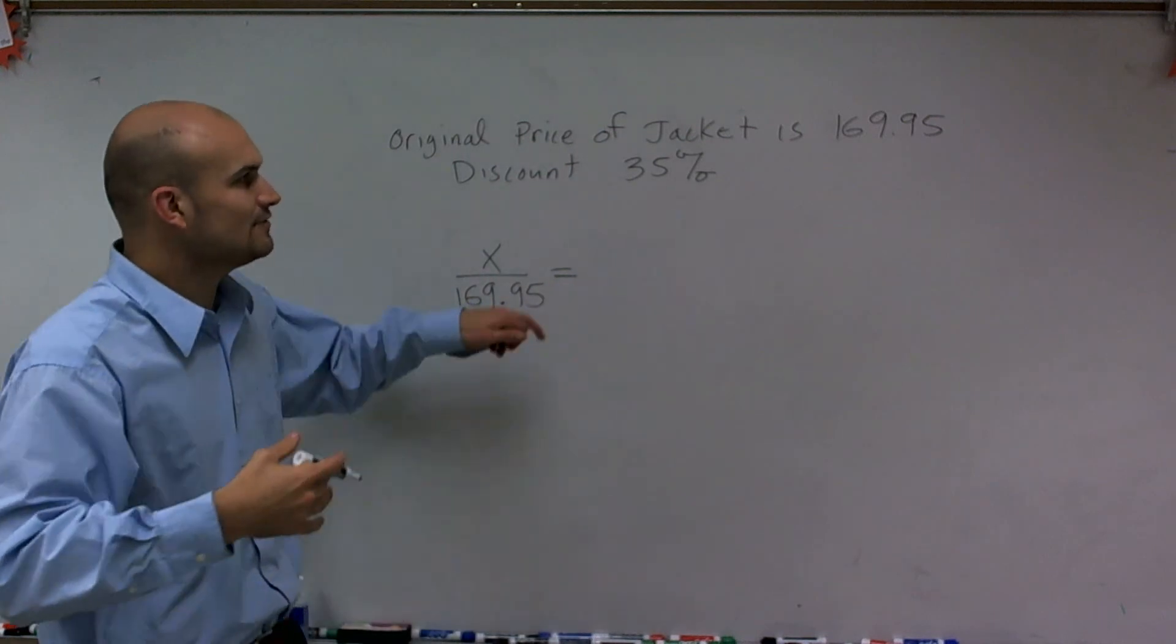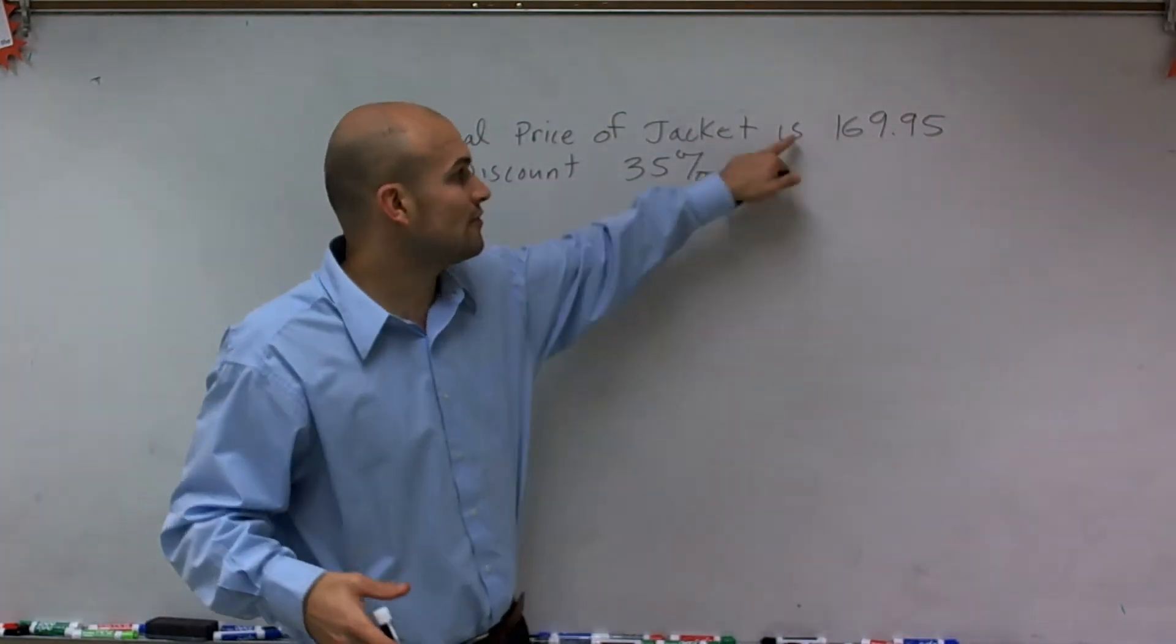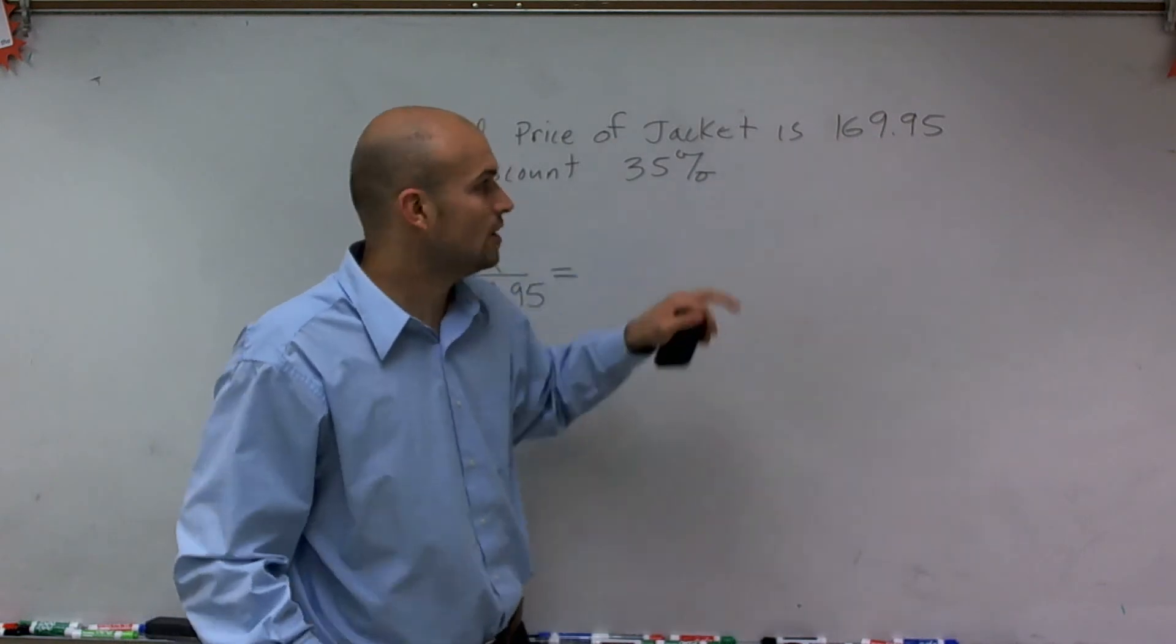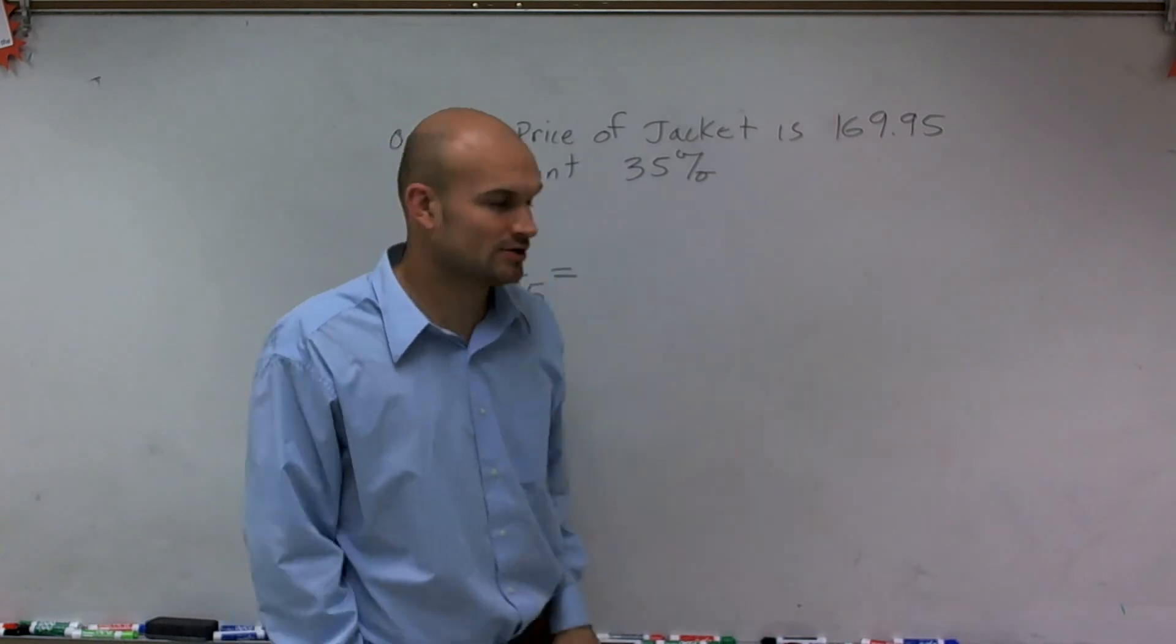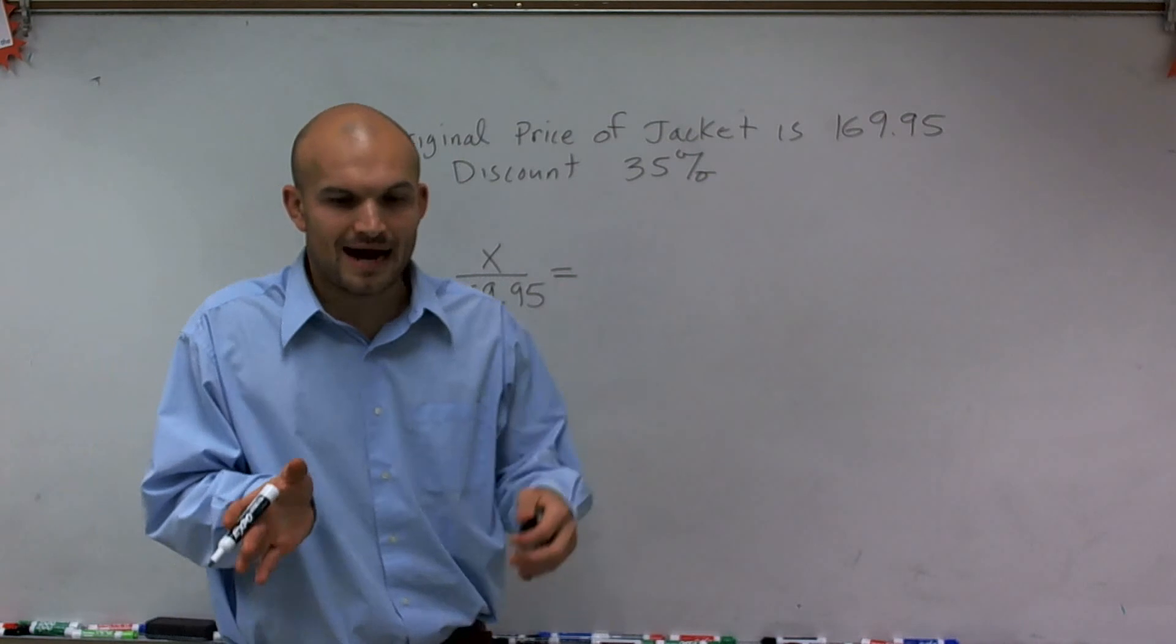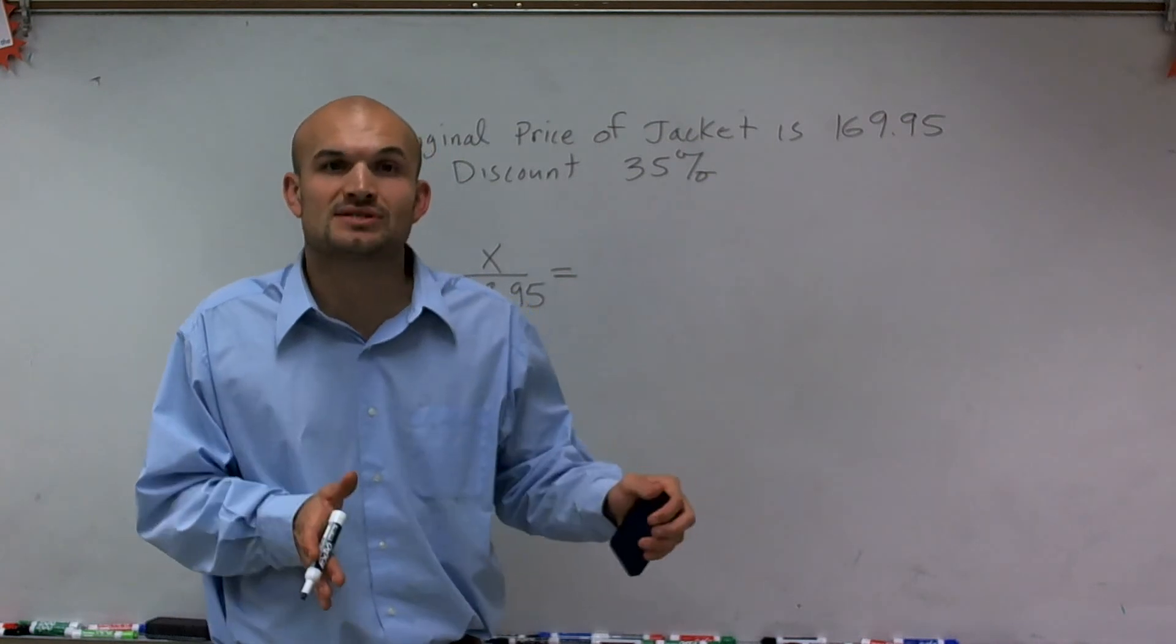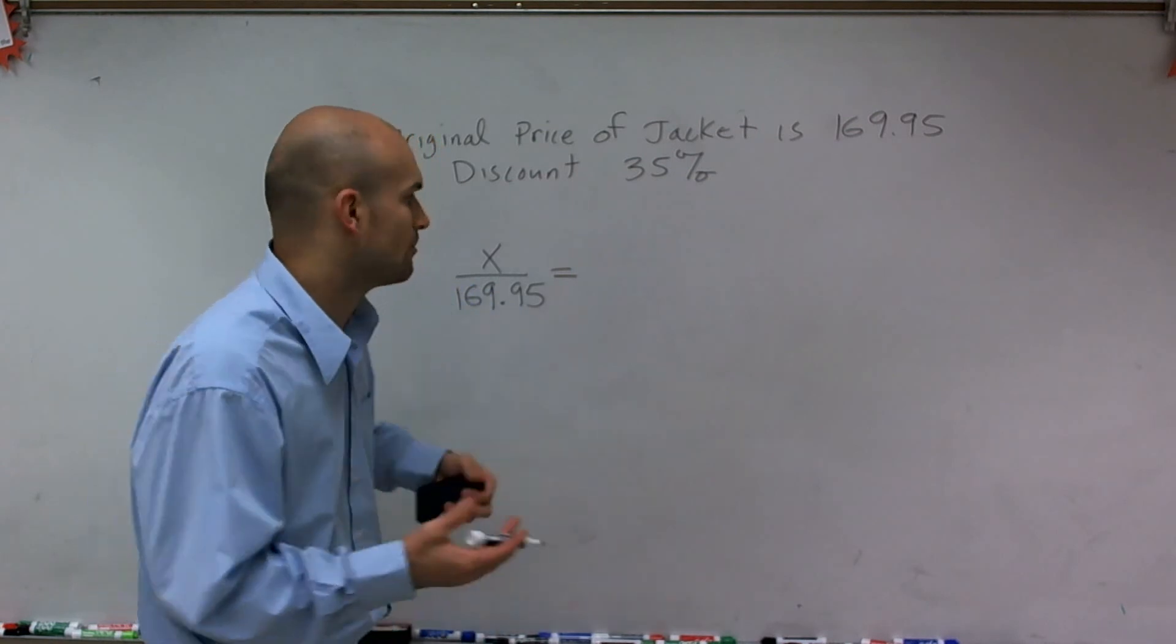Now it says it's 35% off, but we're not looking for a jacket that is 35% of this price. We're looking for 35% from this jacket or 35% of this jacket subtracted from our total price. So what I want to do is say, if I'm going to discount it 35%, then what is my new discounted price going to represent?